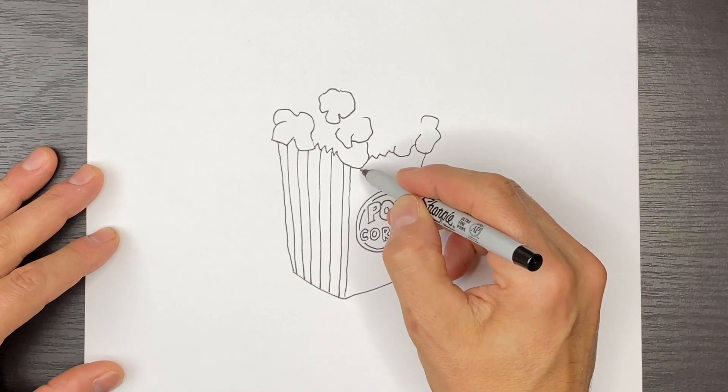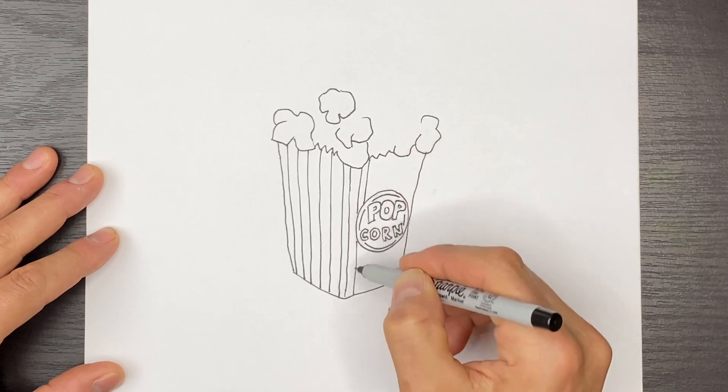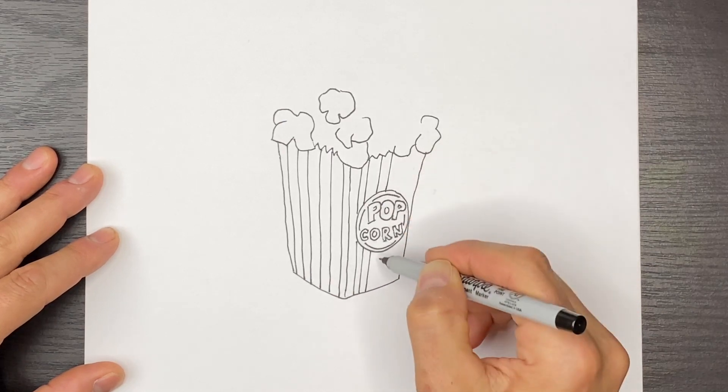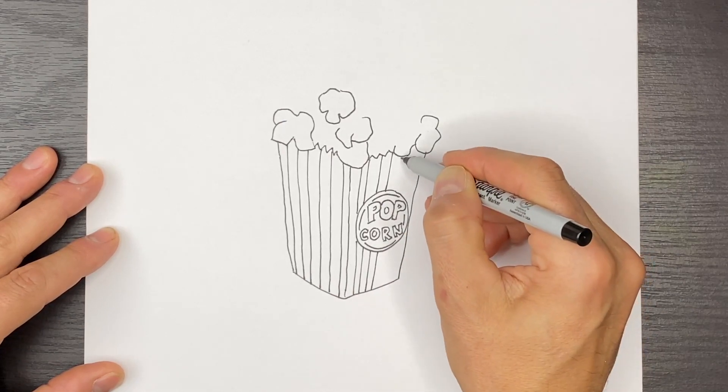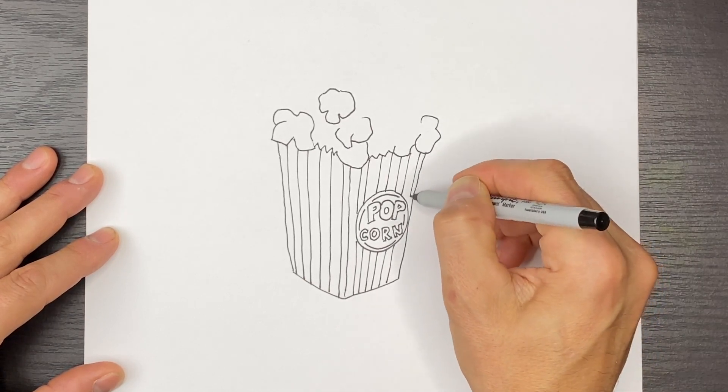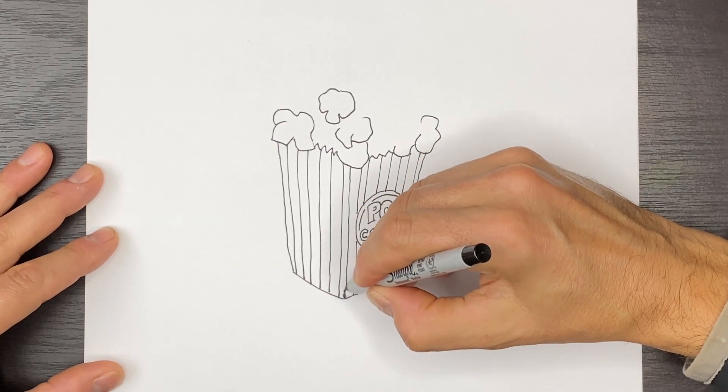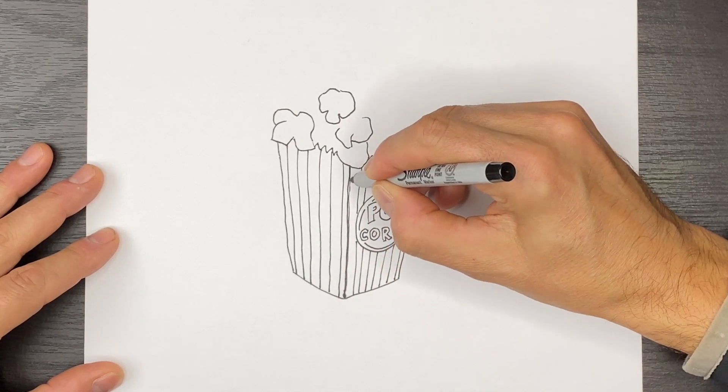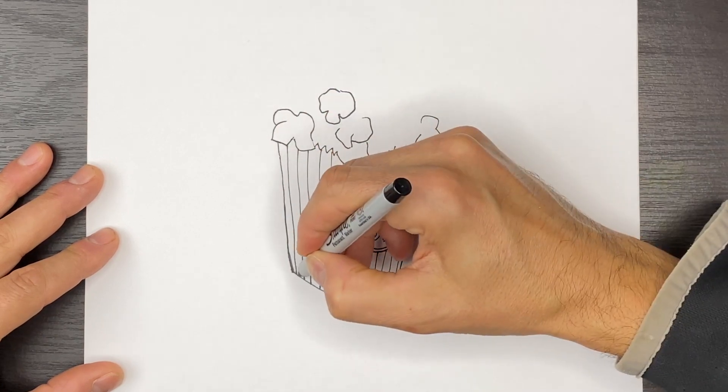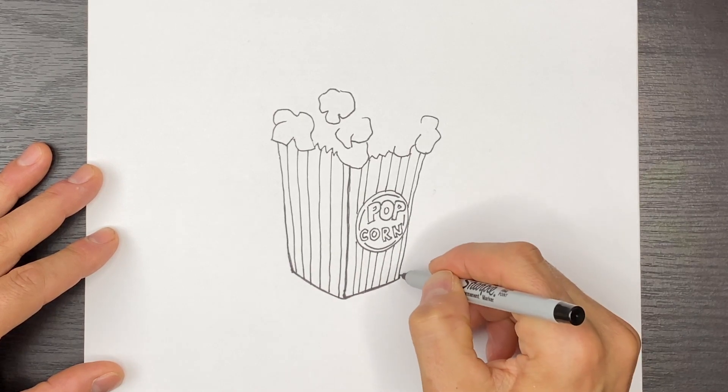And then I'll draw a few more stripes down towards the bottom on this side. I'm going to make sure that I have this center one highlighted here. And then same for the back and bottom, just thicken those lines a little bit like that.